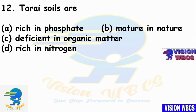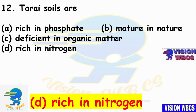Question 12: Tarai soils are? Option A — Rich in Phosphate. Option B — Mature in Nature. Option C — Deficient in Organic Matter. Option D — Rich in Nitrogen. The right answer is Option D: Tarai soils are rich in Nitrogen.